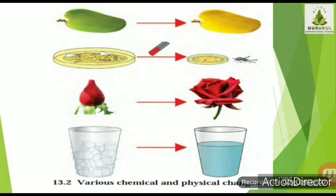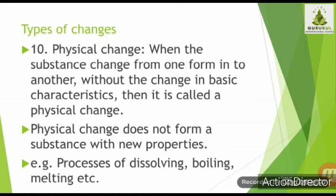On the screen you can see pictures: raw mango, a dish with iron scraps and different pieces where a magnet can be used to separate out the iron pins, a flower forming from a bud, and ice changing into liquid water. We can categorize these changes into different types based on the criteria we have learned.